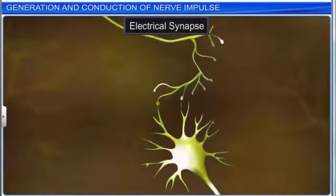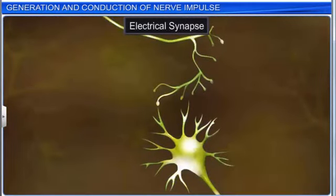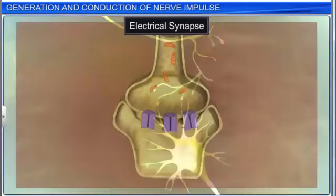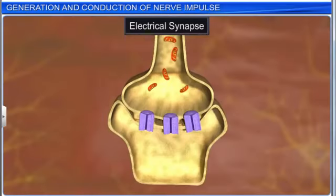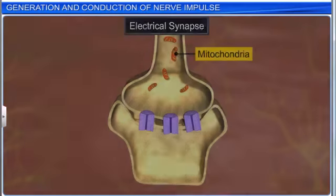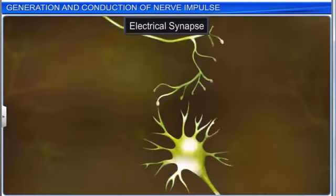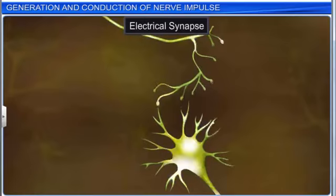This allows the direct flow of electric current from one neuron to another. Synaptic vesicles are absent, and only a few mitochondria are present. Impulse transmission across an electrical synapse is faster than that across a chemical synapse.